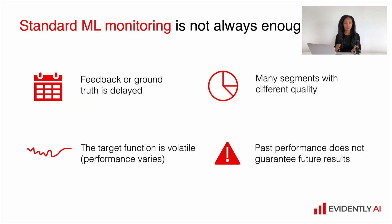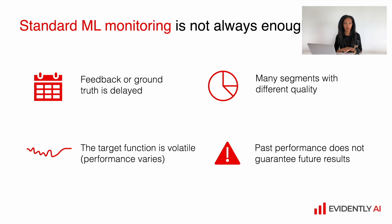But unfortunately it is not always enough. First of all, we cannot guarantee that we will be able technically to measure the performance because we can have delayed feedback or ground truth issues. One solution is to rely on previously estimated performance metrics and assume that in the future we will have more or less the same performance. Unfortunately it doesn't always work like this, especially if we have a pretty unstable or volatile environment. We can also have a problem statement where we have a lot of different types of objects — for example, different categories of services, different groups of products, or different types of users. In this case the aggregated performance metrics are just not enough and we need to monitor performance for each group of users or objects.